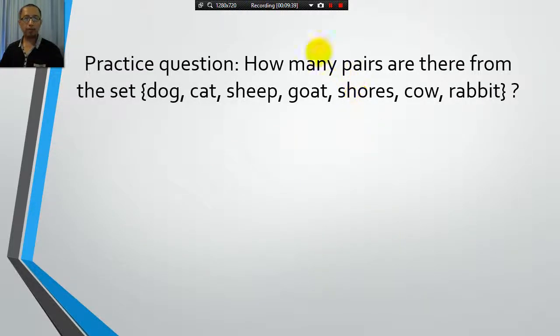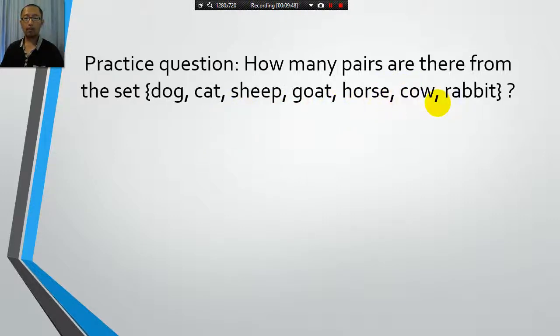Now let's do a practice question. How many pairs are there from the set dog, cat, sheep, goat, horse, cow, rabbit? Okay, so we could go guess and check. We got dog, cat. That is one subset. We can also go cat, sheep. Alright, but that will take too long.